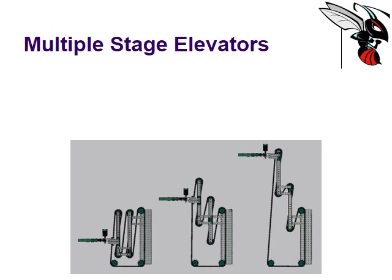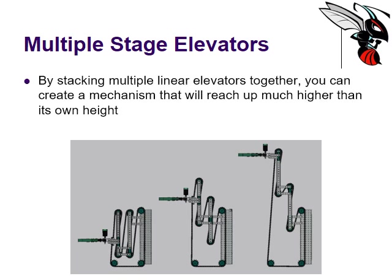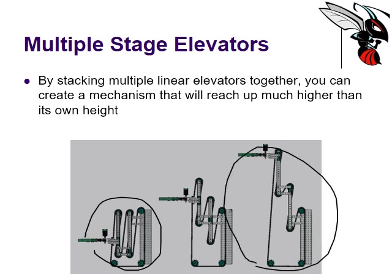With elevators you can also build multiple stages — by stacking multiple linear elevators together you can create a mechanism that reaches much higher than its own height. A sprocket and chain system can pull down to a compact state but expand to a much greater elevation. Experiment with these types of systems to see what elevation you can achieve from a multi-stage elevator.